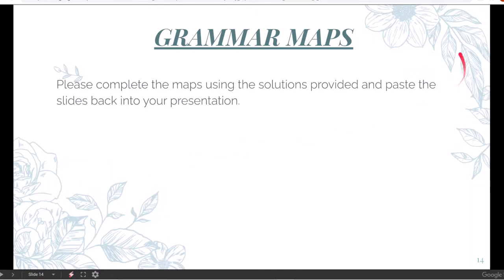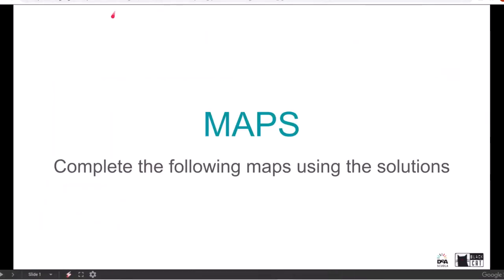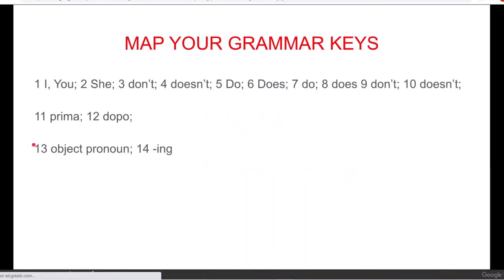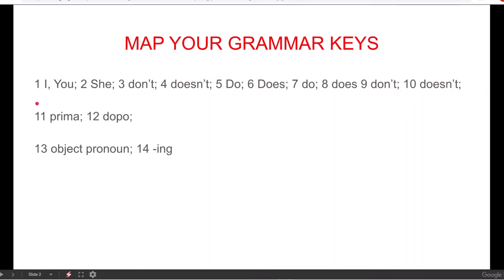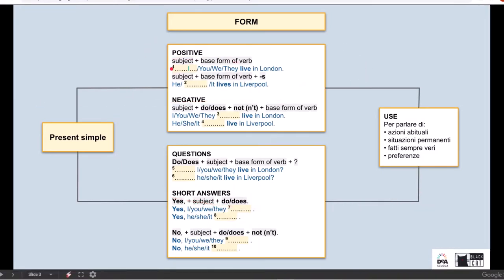This is the last exercise I have for you. You need to complete the grammar maps that you have in your book and use the solutions provided, then paste the slides back into your presentation. If you click the hyperlink, it will open another presentation called 'maps'. I'm asking you to complete the following maps using the solutions — I have included the keys, meaning solutions, for your grammar maps. For example, this is your map and there are small numbers. Subject plus the base form of the verb — this is how you form the present simple. Here you have a small number, number one, and if you go back to your keys, the answer to number one is the pronoun I or you.